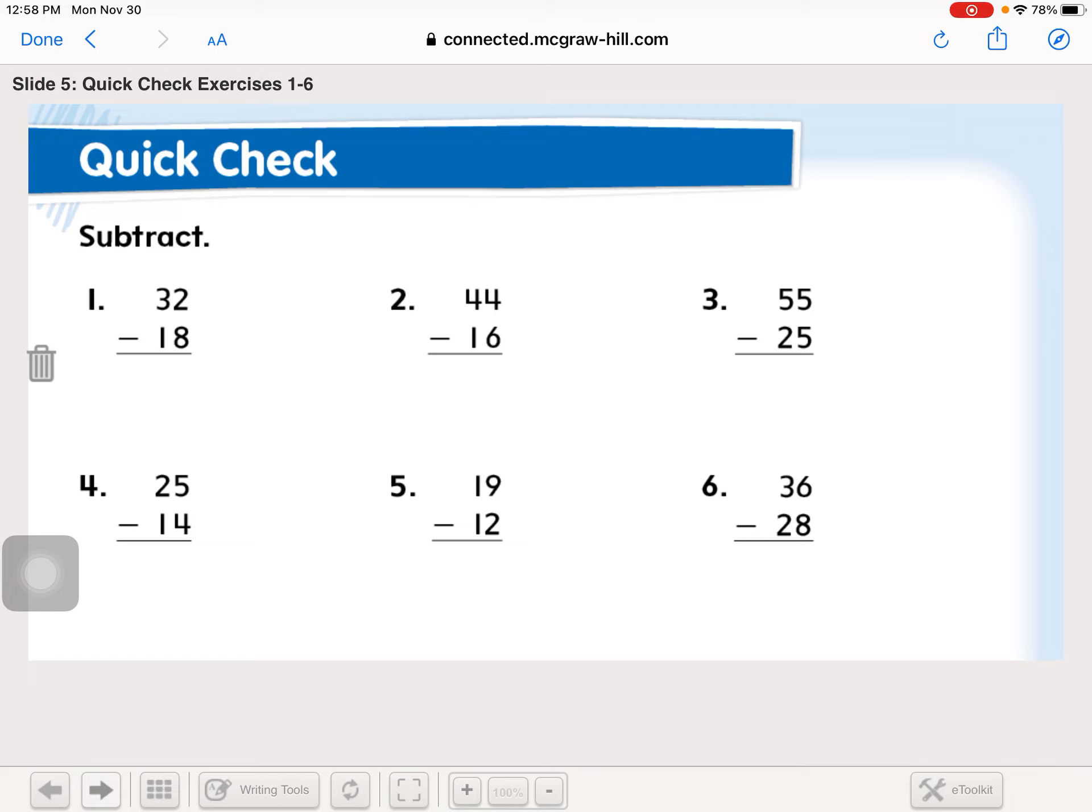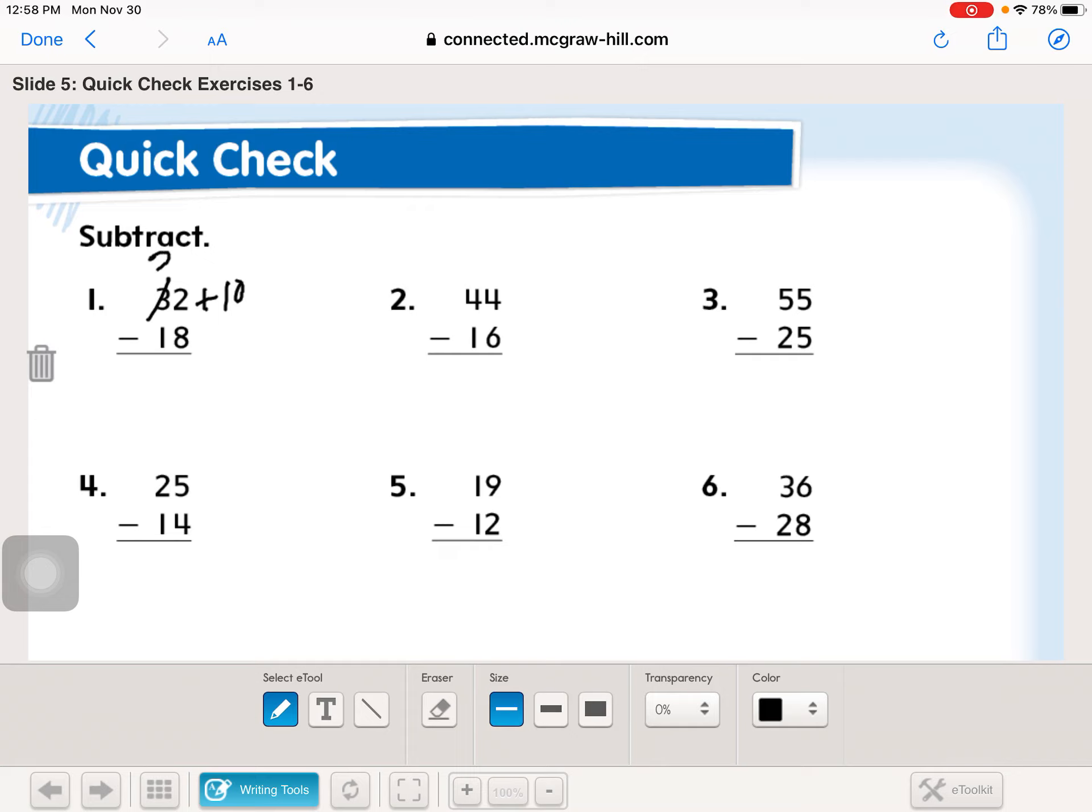All right, let's practice a few of these like we did yesterday. So we have 32 minus 18. More on the top, more on the floor. We have more on the floor. Go next door and regroup 10 more. We have three tens. We're going to take one, which leaves us with two. Two plus 10 is 12. Now we're ready to subtract 12 minus eight. I'm going to start at eight and put eight in my heart. Count up to 12: 9, 10, 11, 12. That's four. Two minus one is one.